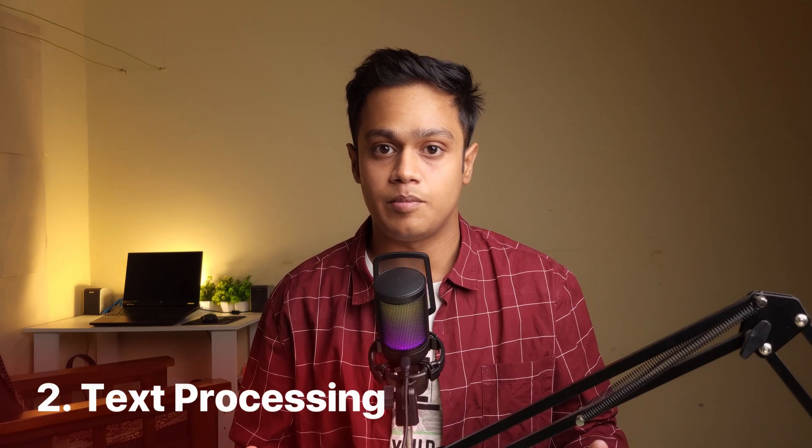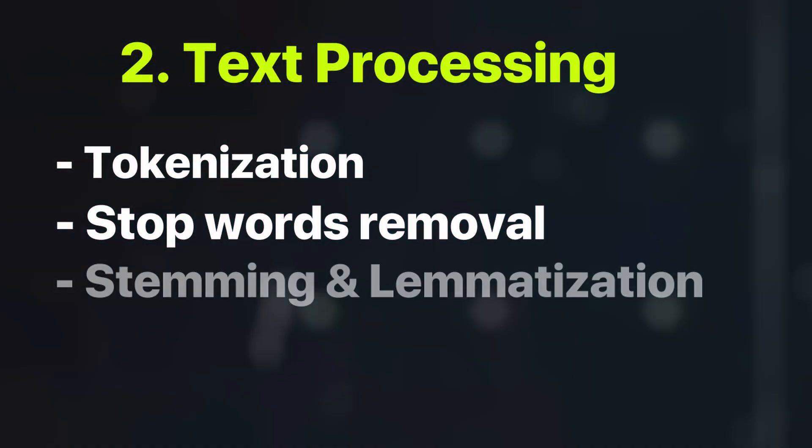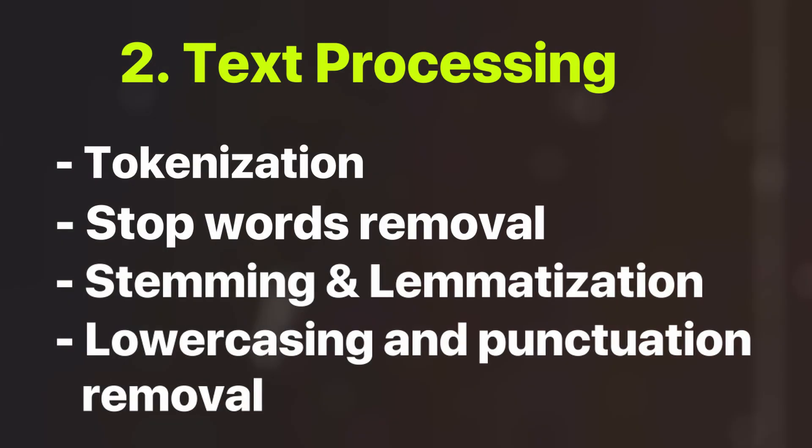The first thing that you need to learn is Natural Language Processing. You don't need to get too deep into the topic, but you need to know the basic concepts. Learn what NLP is and where these applications are being used. Then learn text processing in NLP, which includes tokenization, stop word removal, stemming and lemmatization, and lower casing and punctuation removal. Once you're done with this, move on to parts of speech tagging — understanding different parts of speech like noun, pronoun, and how POS can be used in NLP.